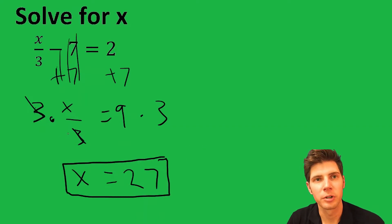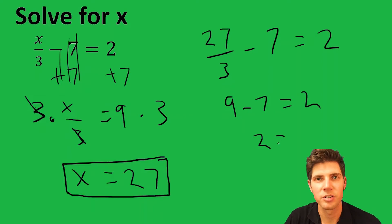If we want to check our work, we can really quick. We can plug 27 in for x, which will get us 27 over 3 minus 7 equals 2. 27 over 3 is 9 minus 7, and then 9 minus 7 is 2. So we have 2 equals 2, so it checks.